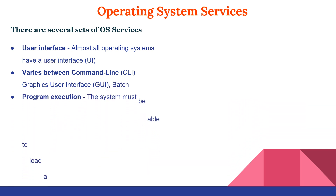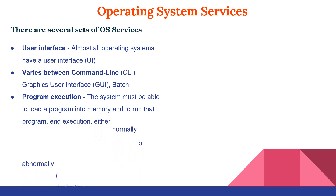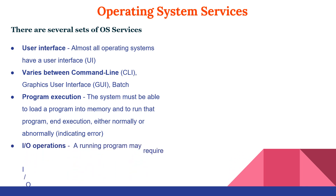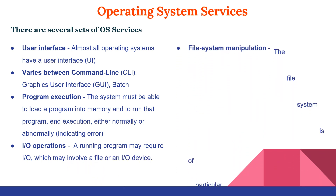Program execution: the system must be able to load a program into memory, run that program, and end execution either normally or abnormally. Input/output operations: a running program may require I/O, which may involve a file or an I/O device. The fifth point is file system manipulation.